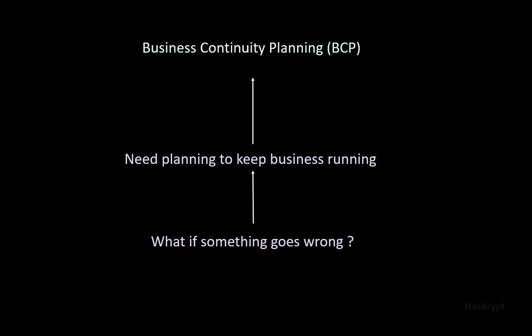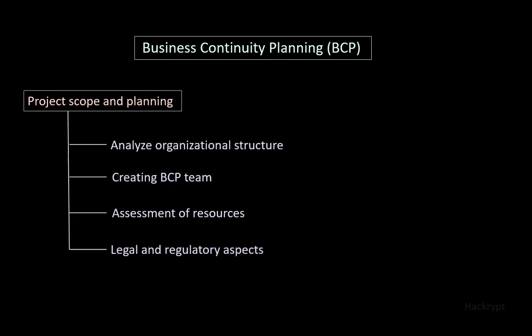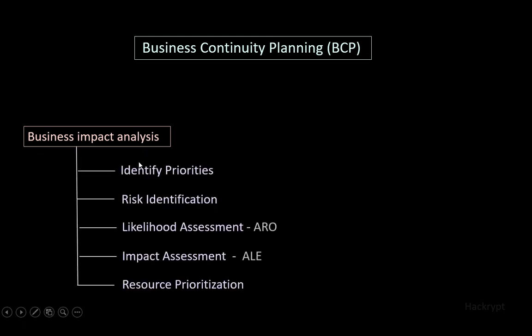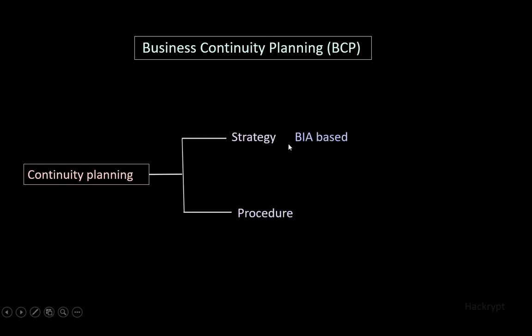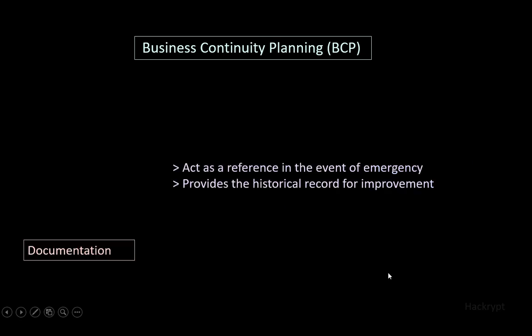If something goes wrong after using all security measures and risk management, we need a plan to keep the business running — that is business continuity planning, BCP. BCP involves five stages: project scope and planning, business impact analysis, continuity planning, approval and implementation, and documentation. In project scope and planning, we analyze the organizational structure, find the departments and people to be involved, create a team, assess required resources, and review relevant laws and regulations. In business impact analysis, we identify business priorities to find the most critical processes, identify risks, conduct likelihood assessment based on ARO, impact assessment based on ALE, and allocate resources. In continuity planning, we create a strategy based on the BIA and develop procedures ensuring safety is given first to people, then to the facility, then to the infrastructure. In approval and implementation, we get plan approval from top management, implement the plan, and conduct training and awareness for those involved in the BCP. Documentation acts as a reference in the event of an emergency and provides a historical record for improvement.